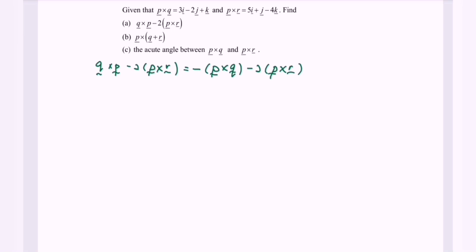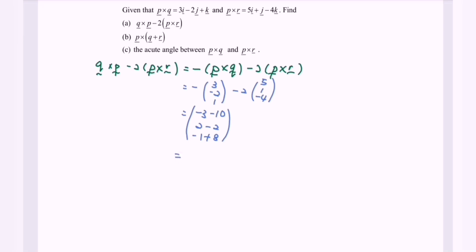Substitute the situation. We have negative bracket P×Q which is (3, -2, 1), minus 2 bracket P×R which is (5, 1, -4). Expanding and simplifying: -3 minus 10 gives -13 for i; 2 minus 2 gives 0 for j; and -1 plus 8 gives 7 for k. So the vector will be (-13, 0, 7).